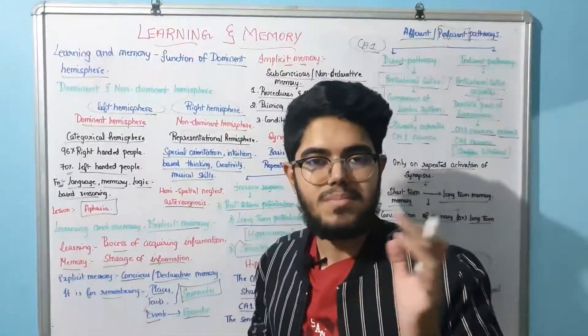To summarize: the left hemisphere is also called the dominant hemisphere, and the right hemisphere is also called the non-dominant hemisphere. Next, we'll look at memory types — specifically explicit and implicit memory.